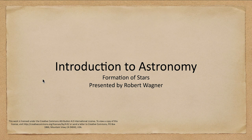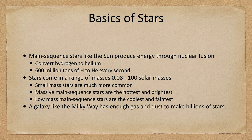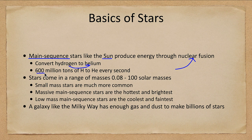Welcome to the introduction to astronomy. In this lecture we are going to talk about the formation of stars — how stars go about forming from the material in the interstellar medium. Most stars are main sequence stars, much like our Sun, and they produce energy through nuclear fusion, converting hydrogen into helium at the rate of 600 million tons every single second. How much depends on the mass of the star — a more massive star converts more, a less massive star less.